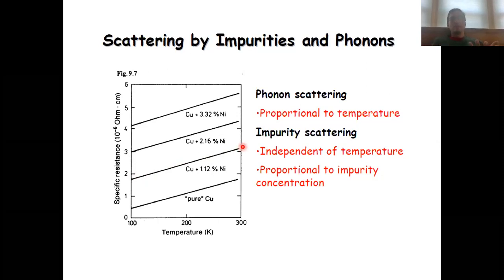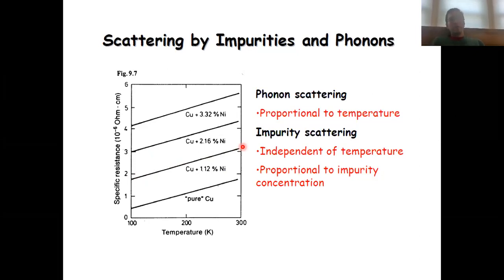That is because the nickel doesn't fit perfectly into the lattice, and so there are additional possibilities for collisions between an electron moving through the alloy and the lattice itself. You see again that the collisions with the lattice dominate the behavior, and the charge carrier concentration is irrelevant. The effect increases with increasing doping levels — when you include 2.16% nickel instead of 1.12%, the resistivity goes further up.